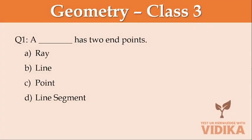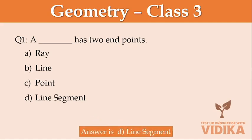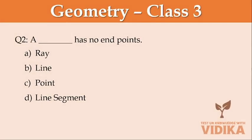A dash has two endpoints. Option A ray, option B line, option C point, option D line segment. A dash has no endpoints. Option A ray, option B line, option C point, option D line segment.